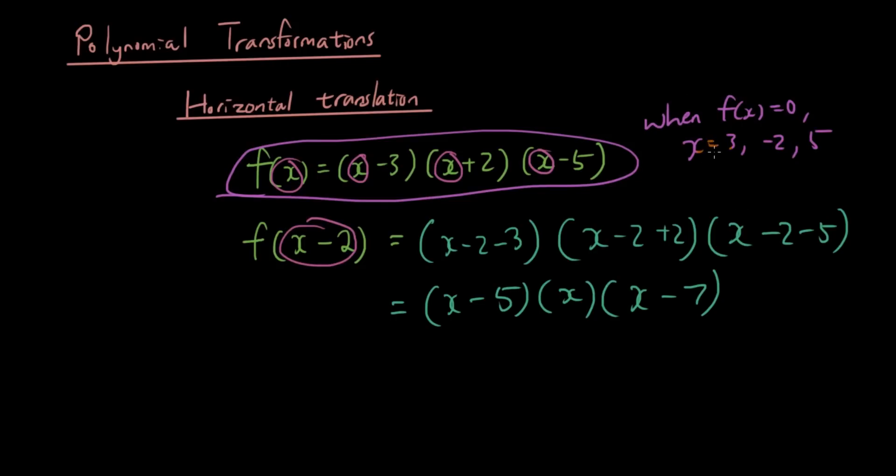That was the x intercepts. With this new equation here, when y is equal to 0, x is equal to 5, 0, and 7. So you can see these three numbers are essentially these three numbers plus 2. 3 plus 2 is 5, negative 2 plus 2 is 0, 5 plus 2 is 7. And that's why the graph is going to shift to the right.